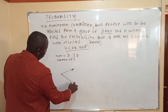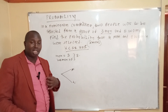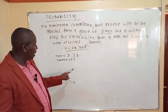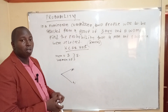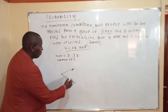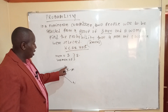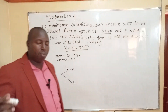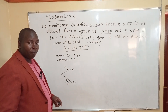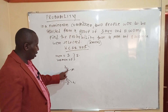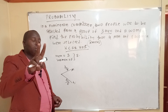For the first selection, a man and a woman have equal chances of being selected. The probability of the first one being a man is the number of men out of the total number of people — that is 3 out of 8. The probability of the first one being a woman is 5 out of 8.